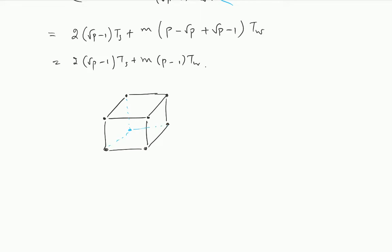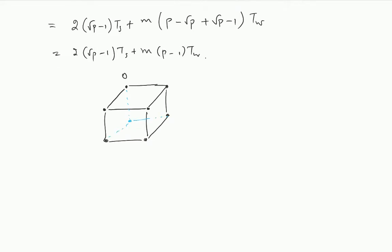This is your hypercube. I have this node: 0, 1, 2, 3, and the node below 0 will be 4, 5, 6, and 7. These are the nodes.